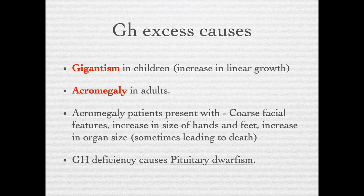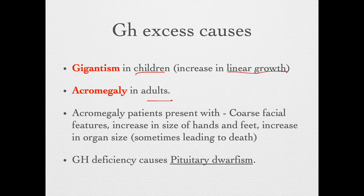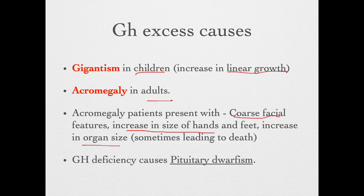Growth hormone excess causes two conditions based on who it affects. In children, excess growth hormone causes gigantism, where there is an increase in linear growth. In adults, growth hormone excess causes acromegaly. Since bone does not grow after a certain age, an adult with growth hormone excess does not have linear growth but instead presents with coarse facial features, an increase in the size of hands and feet, and an increase in organ size which can sometimes lead to death. A deficiency in growth hormone during growing ages causes pituitary dwarfism.